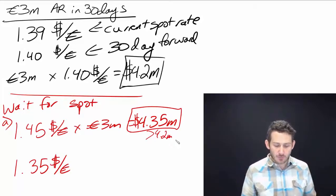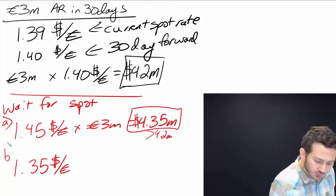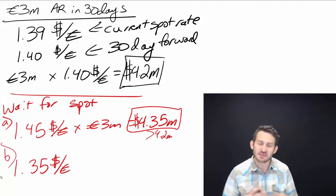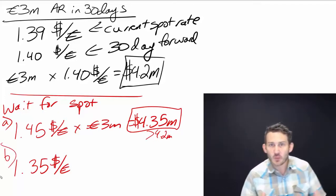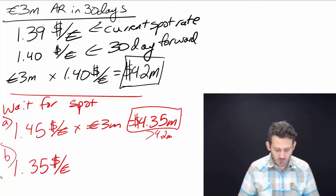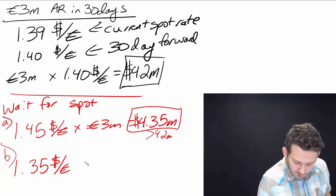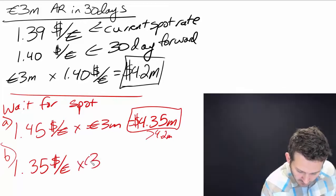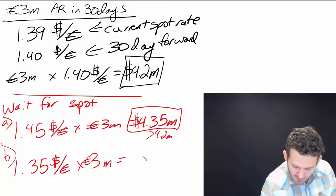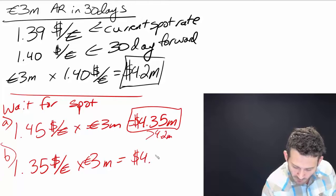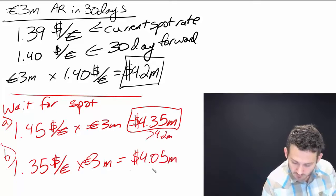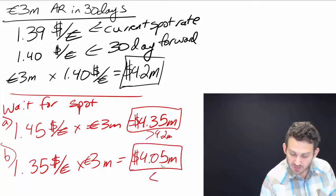But then, on the other hand, what happens if the rate actually goes down? What happens if the dollar appreciates because it's more valuable? So what we'll end up with then is we'll multiply by the 3 million euros and we'll end up with 4.05 million dollars.